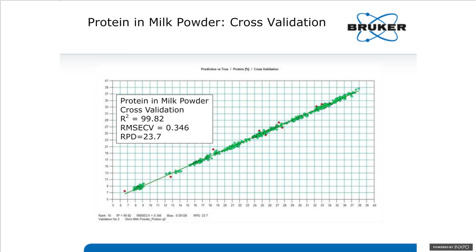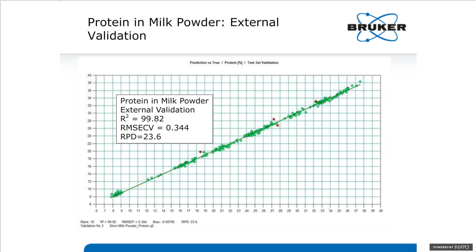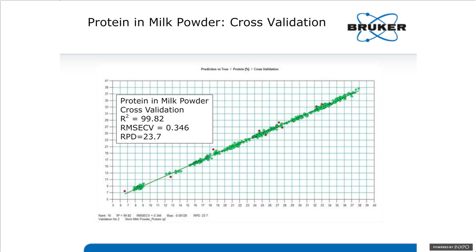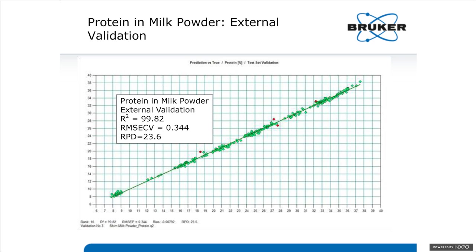Looking at the cross-validation of protein in milk powder, this is the calibration itself. The R-squared is 0.9982 with a root-mean-squared error of 3.46, slope right around 1, and the RPD value around 23.7 — indicative of a very robust calibration. The external validation runs samples not part of the calibration set, and the key here is that the root-mean-squared error of 3.344 is very similar to the cross-validation error, indicating a predictive model that performs equally well on the calibration set as on the external validation samples.